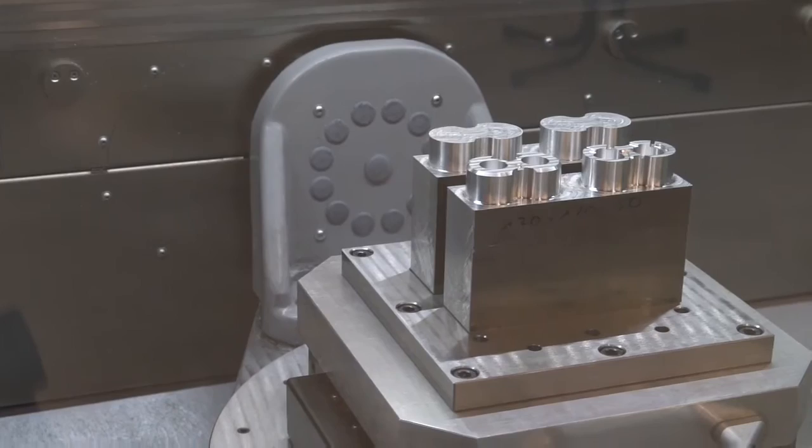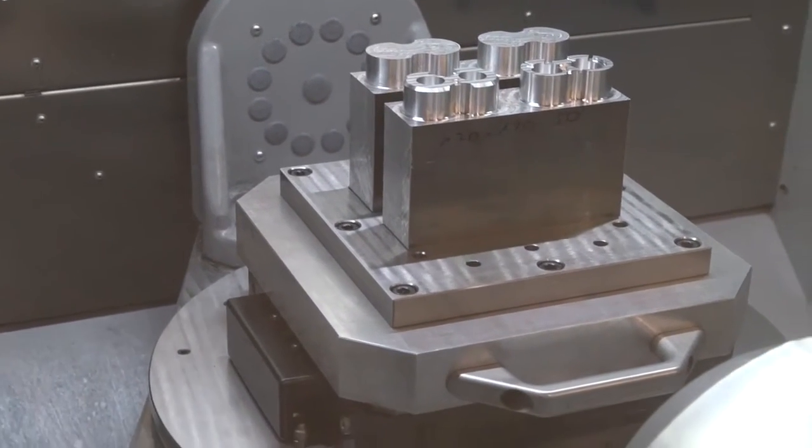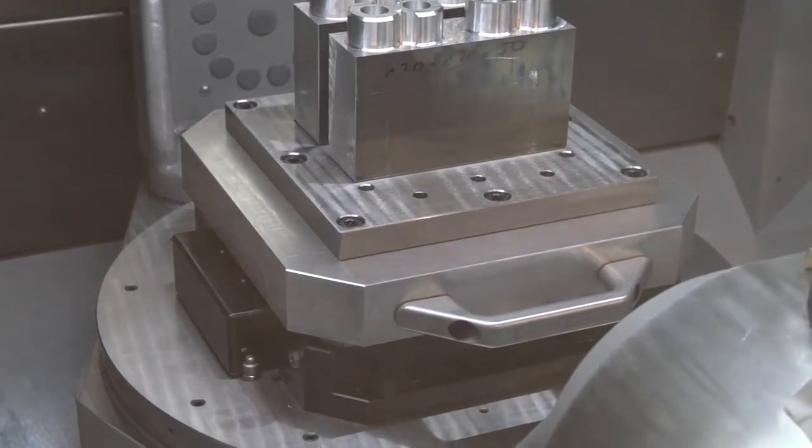And I notice it's a trunnion machine. What's the largest component we can fit on it? The largest diameter would be 600, up to 500 kg on the fourth and fifth axis, two tons on the three axis.